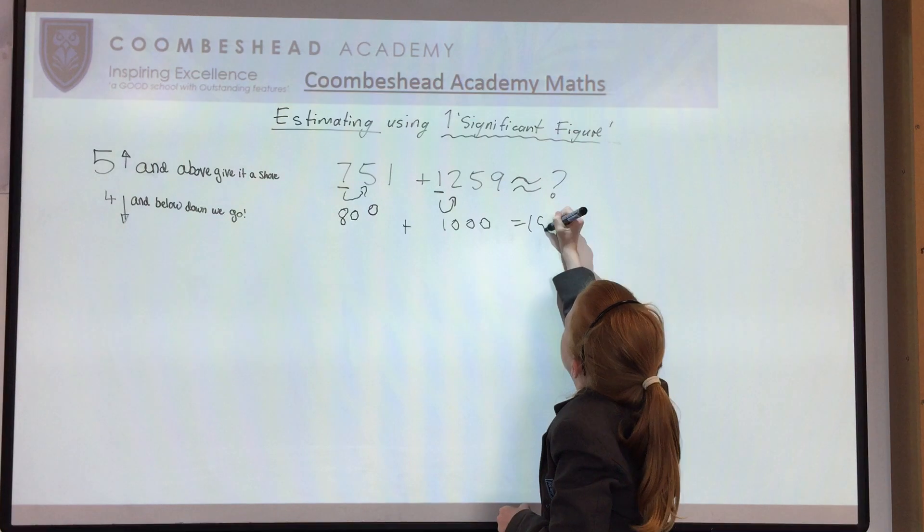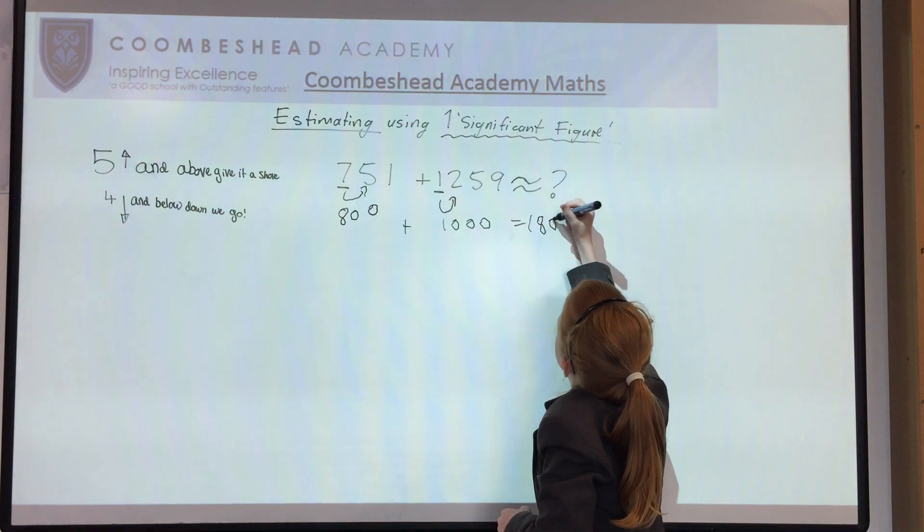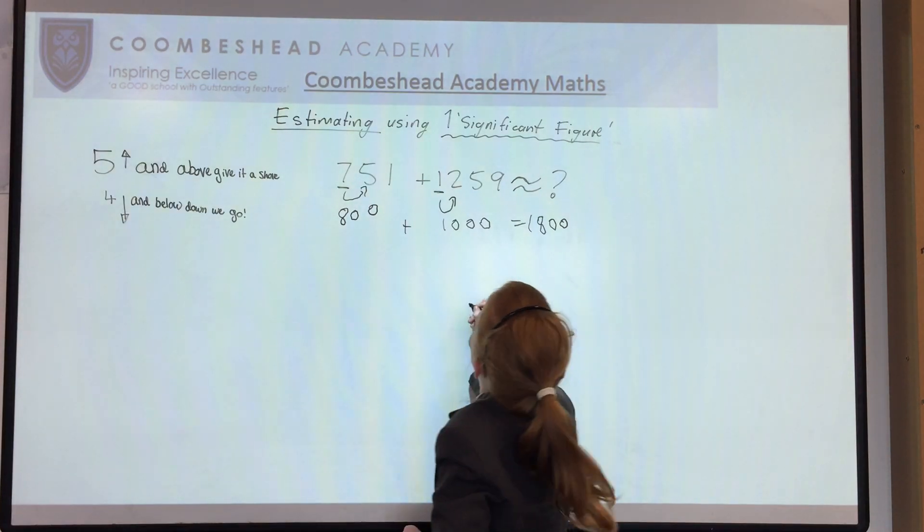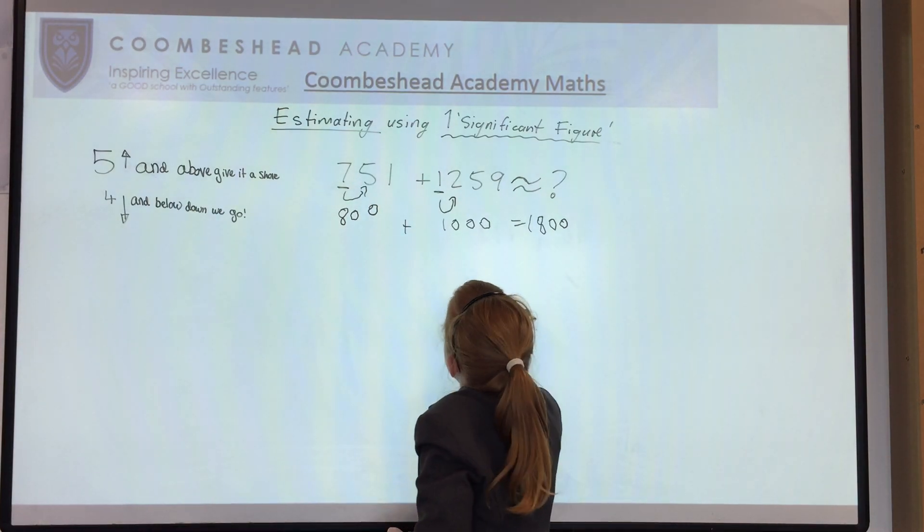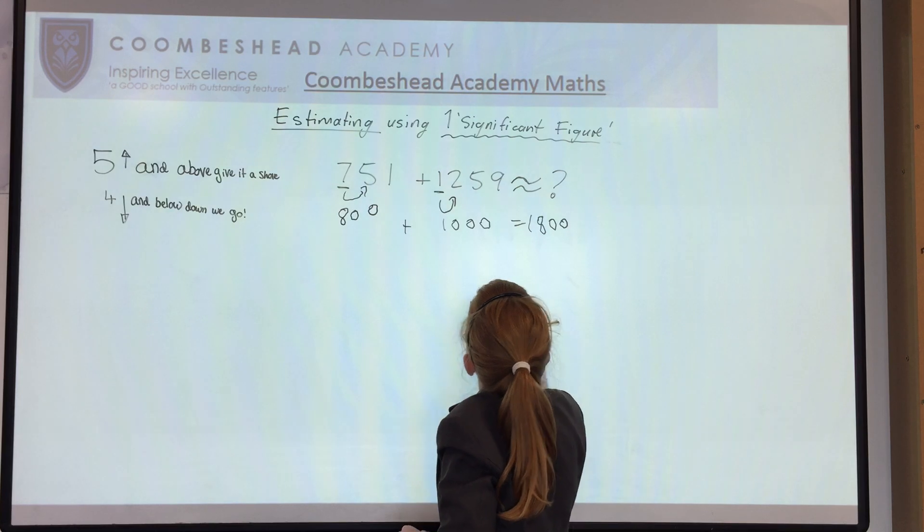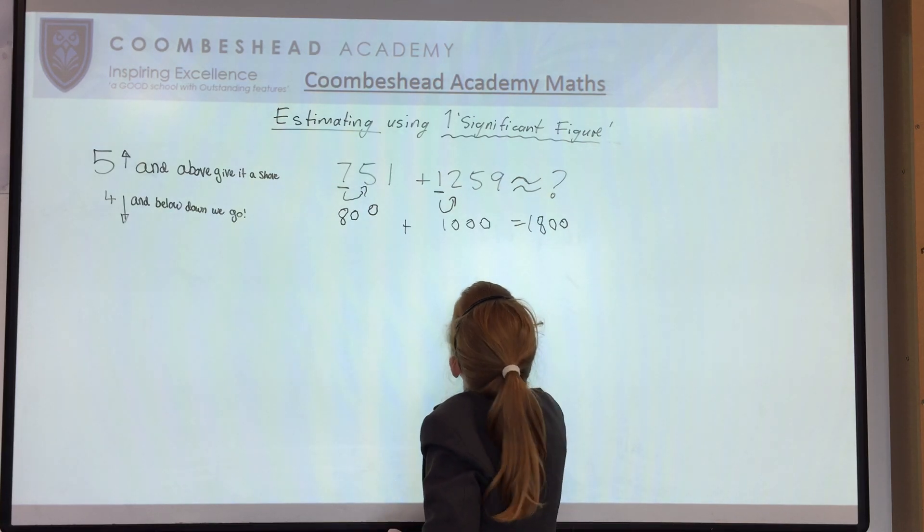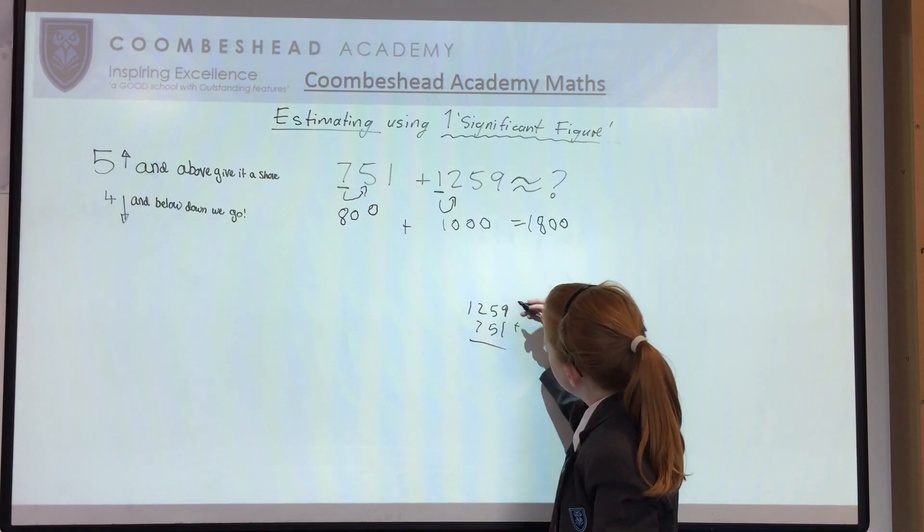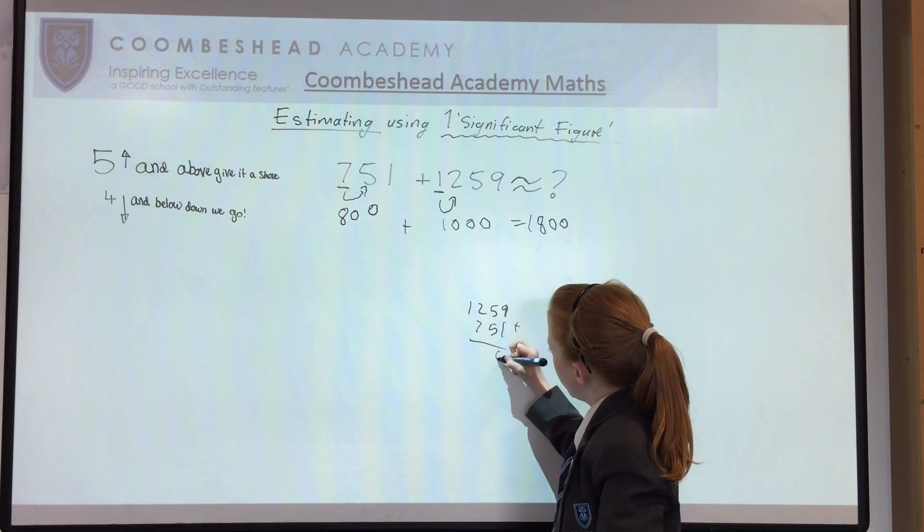No, 1800. Now let's do this sum properly: 1259 plus 751, which equals 79 and 1 equals 0.